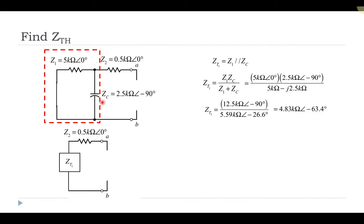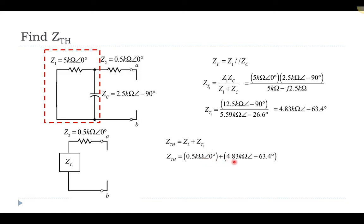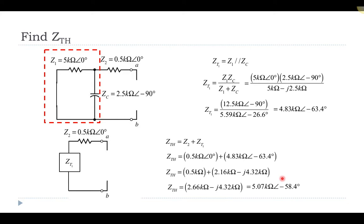We replace those two parallel components with the total equivalent impedance ZT1. Now the 0.5 kΩ resistor and ZT1 are connected in series toward the open terminals, so the Thévenin equivalent impedance is just their sum. That is 0.5 kΩ at 0° plus 4.83 kΩ at −63.4°. Converting to rectangular form, adding the real and imaginary parts, and converting back to phasor notation gives ZTH = 5.07 kΩ at a phase angle of −58.4°.